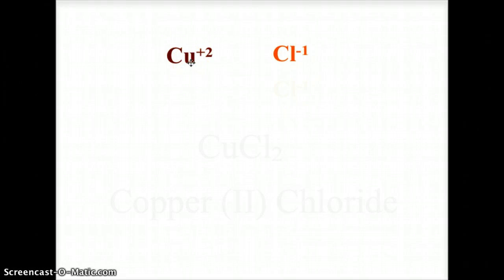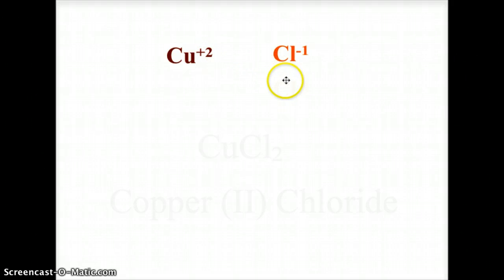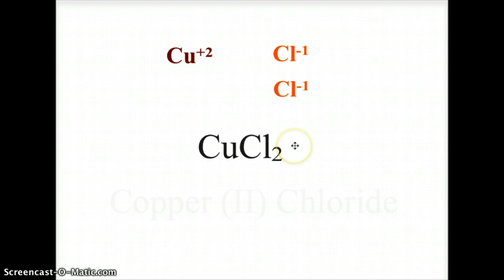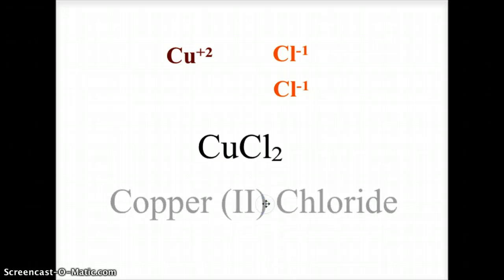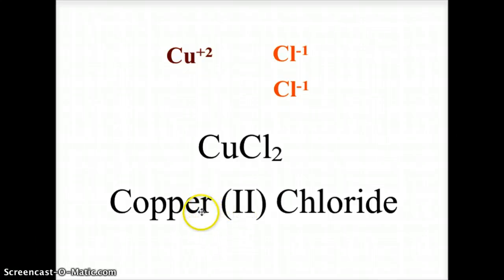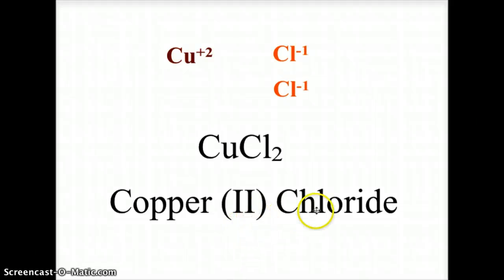Here we have copper, again a transition metal. In this case, copper takes on its +2 form, but it can also be +1. Copper +2 matches up with two chloride ions, making CuCl2. When we name it, we identify the +2 charge with the Roman numeral II: copper(II) chloride. The metal keeps its name, we signify the charge with the Roman numeral, and the nonmetal takes '-ide' — copper(II) chloride.